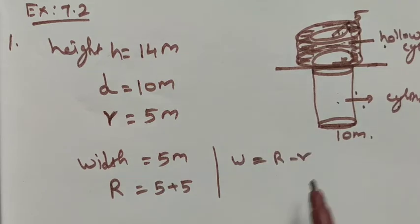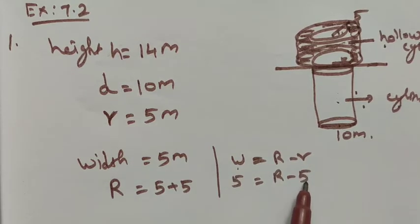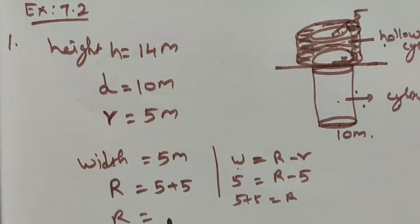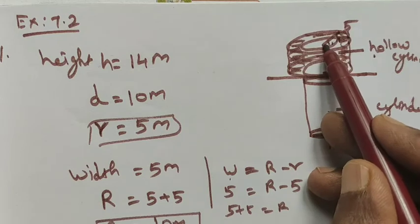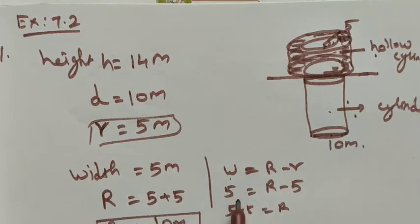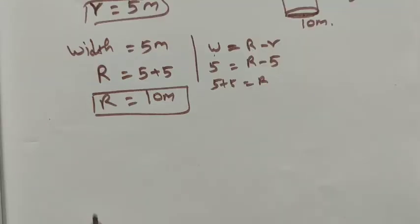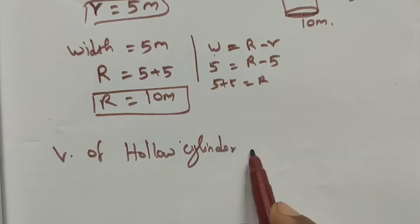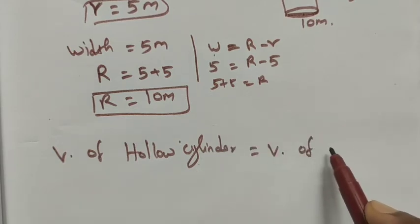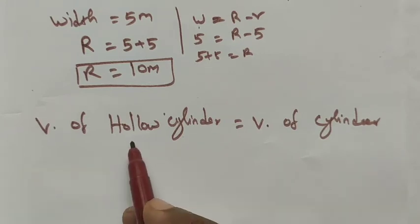We can use the formula: width equals capital R minus small r. Width is 5 and small r is 5, so R equals 5 plus 5 equals 10 meters. The volume of the hollow cylinder (embankment) equals the volume of the cylinder (the well), since the same sand dug out from the well is spread to form the embankment.